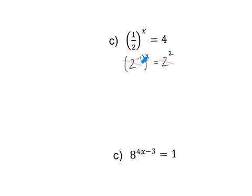Keep in mind there's an exponent here and this is an exponent, so they multiply. Negative 1 and x multiply to get negative x, and then this 2 drops. To get x by itself, I need to move the negative sign — I divide off a negative 1. This cancels, x comes down, and 2 divided by negative 1 is negative 2. So x is equal to negative 2.